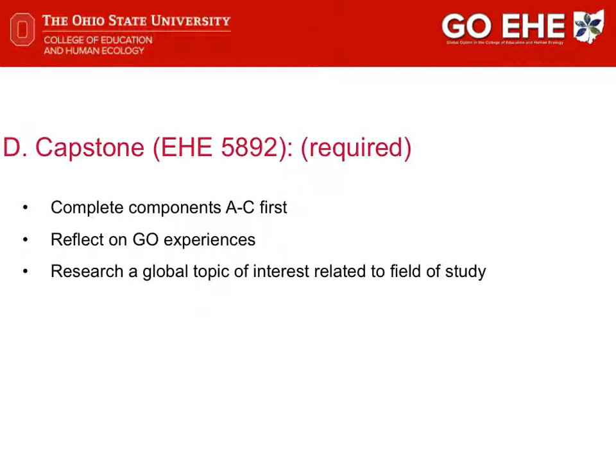All GOE students must complete three credit hours of the Senior Capstone course, EHE 5892. In order to take this course, students must have completed components A through C of the GOEHE program. GOE students are eligible to take this course beginning their junior year at Ohio State. Through this course, GOE students will have the opportunity to reflect on their experiences in the GOE program and research an international topic of interest related to their field of study.